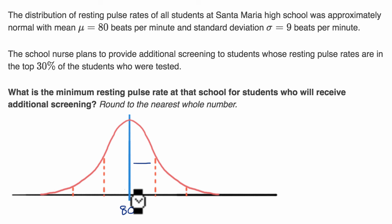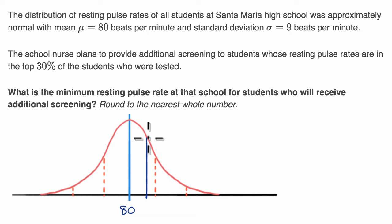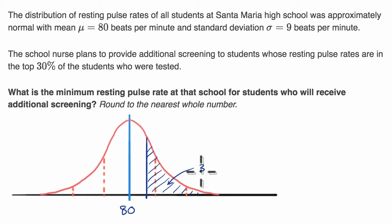You could also go standard deviations below the mean — one standard deviation below would be 71, and two would be 62. But what we're concerned about is the top 30%, because that is who is going to be tested. So there's going to be some threshold value here. If you are at that score, you have reached the minimum threshold to get additional screening — you are in the top 30%. That means this area right over here is going to be 30%, or 0.3.